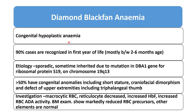In Diamond-Blackfan anemia, it is a congenital hypoplastic anemia. In 90% of cases it presents in the first year of life, mostly between 2 to 6 months of age. Etiology: it is sporadic in some cases, and sometimes inherited due to mutation in the DBA1 gene for ribosomal protein S19 on chromosome 19q13. In more than 50% of cases, congenital anomalies are present including short stature, craniofacial defects, upper extremity defects including triphalangeal thumb and syndactyly.